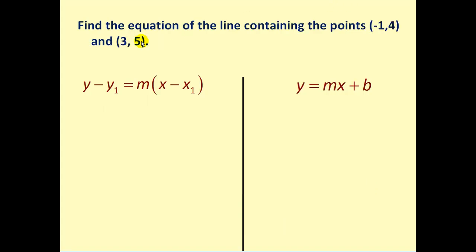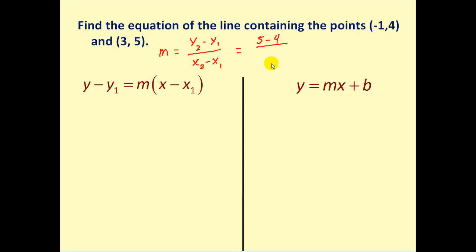Let's look at one more: find the equation of the line containing the points (-1, 4) and (3, 5). In both methods we first need the slope. Using the formula (y₂ - y₁)/(x₂ - x₁), we get five minus four over three minus negative one, giving a slope of one-fourth.